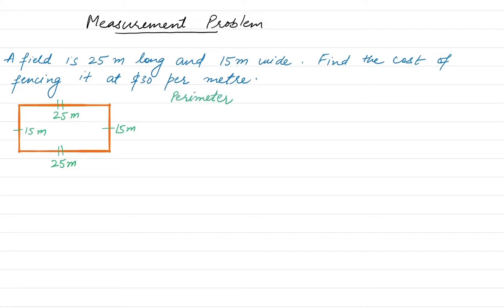The perimeter of a rectangle is equal to the sum of all the sides, or we can say it's 2 times length plus breadth. So let's do the sum of all the sides, that's easy, so it will be 80 meters.